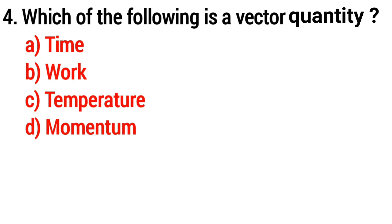Question 4: Which of the following is a vector quantity? Answer option D: Momentum.